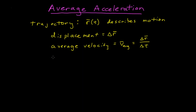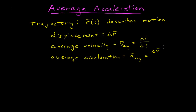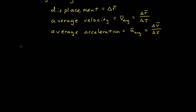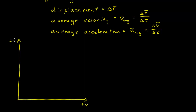And so now we want to move on and describe the average acceleration. The average acceleration is also a vector, and it's described as the difference between two velocities at two points in time. So let's take a look at what that means. If I give myself a coordinate system here, with x and y axes, something like we had before.